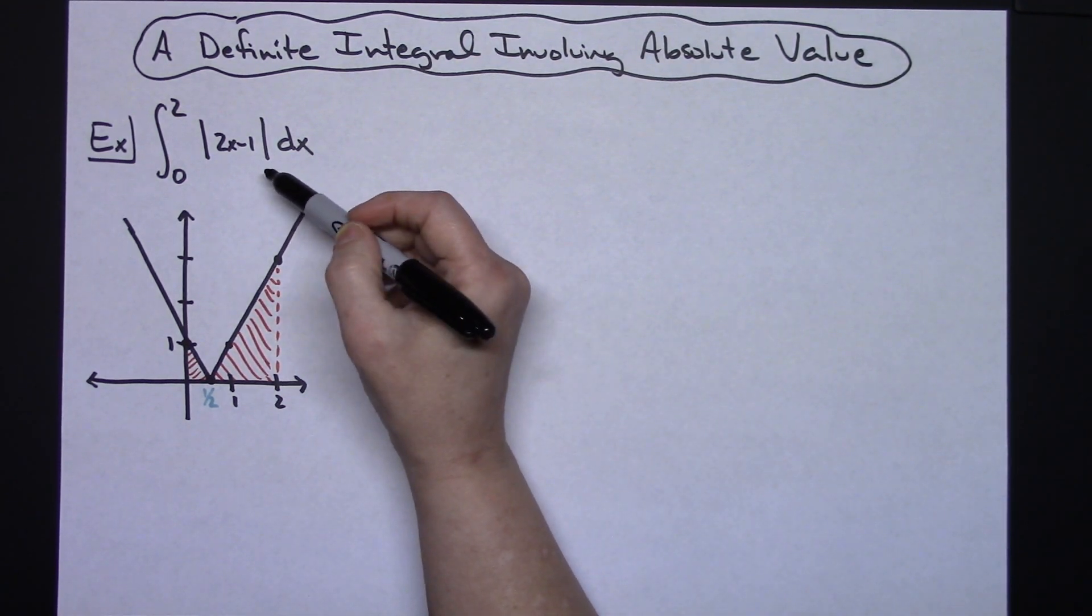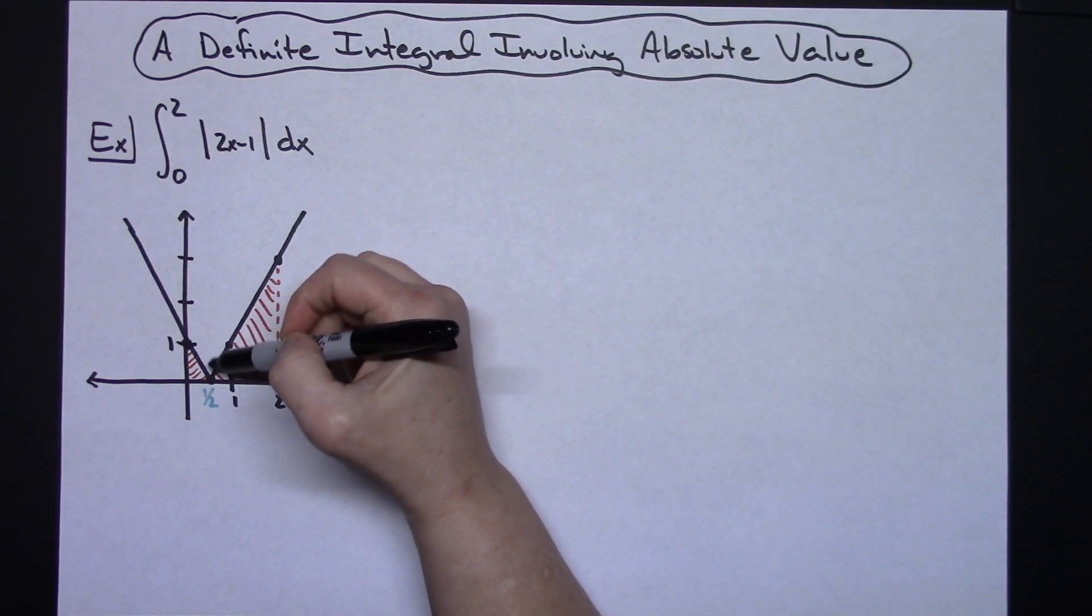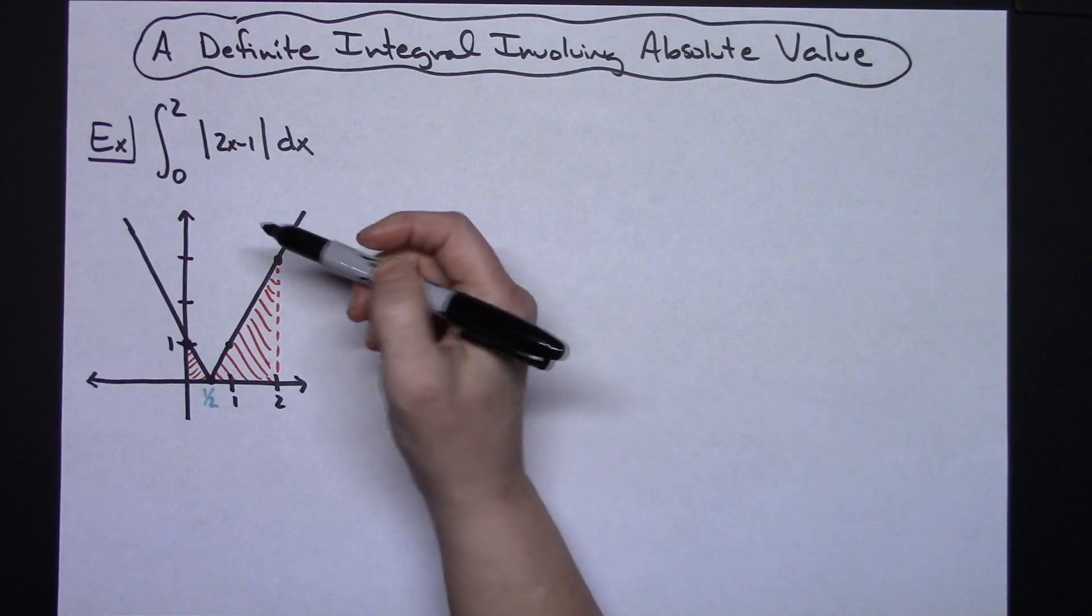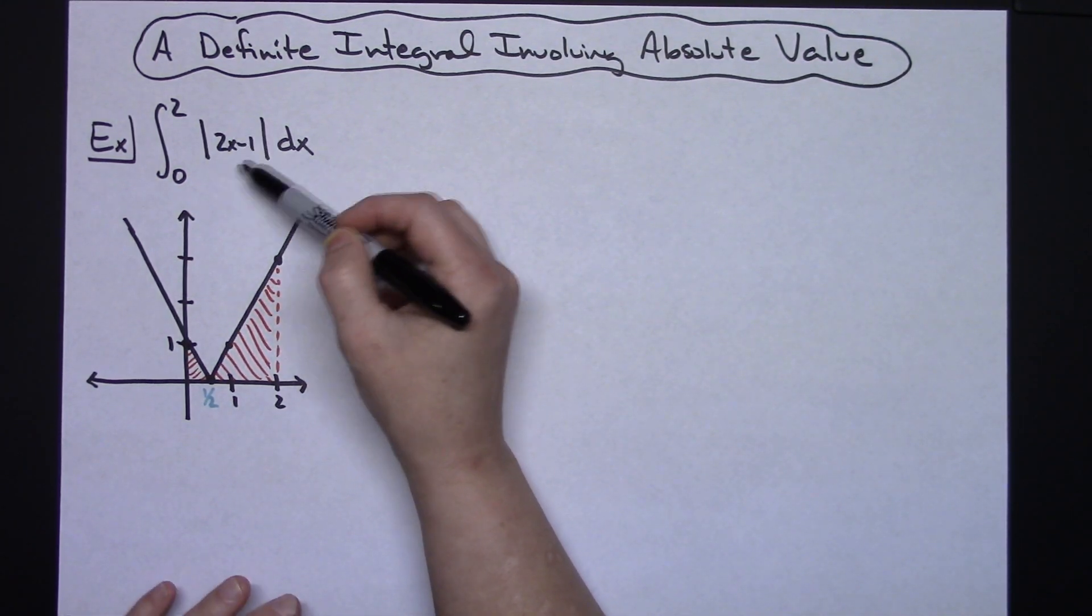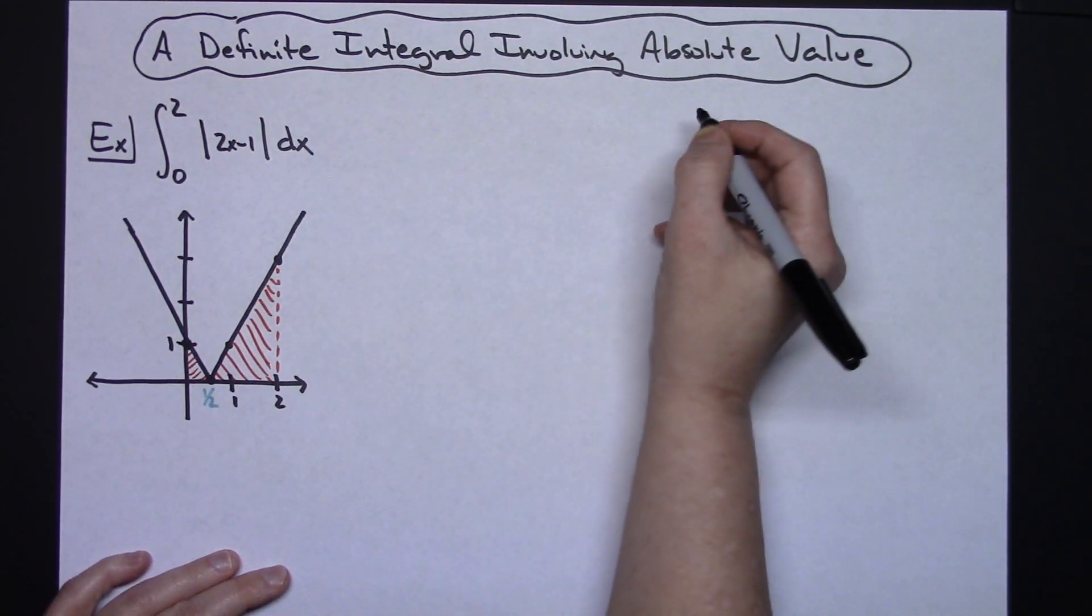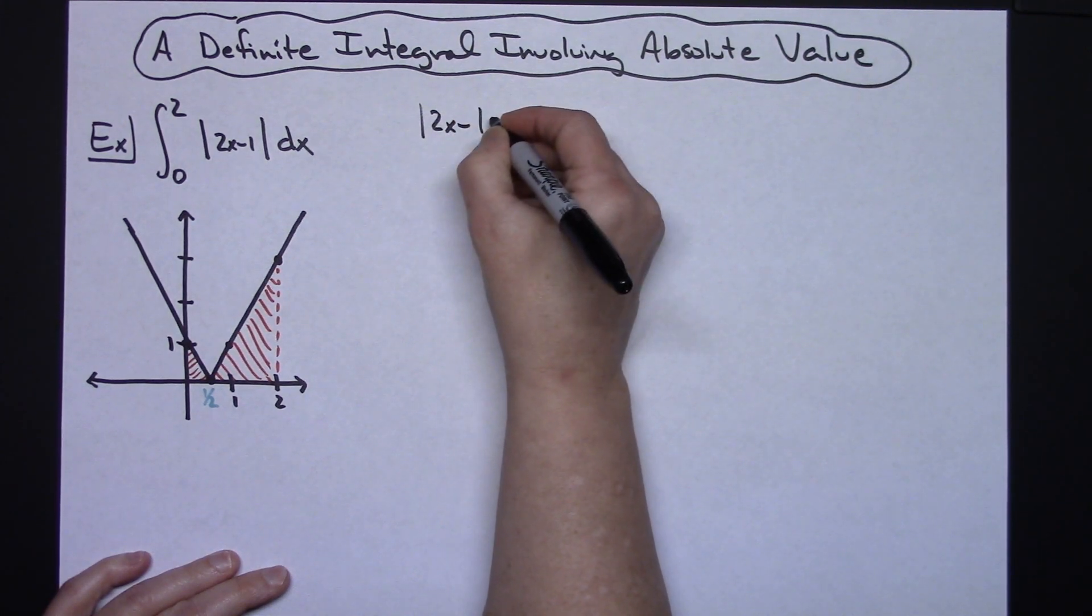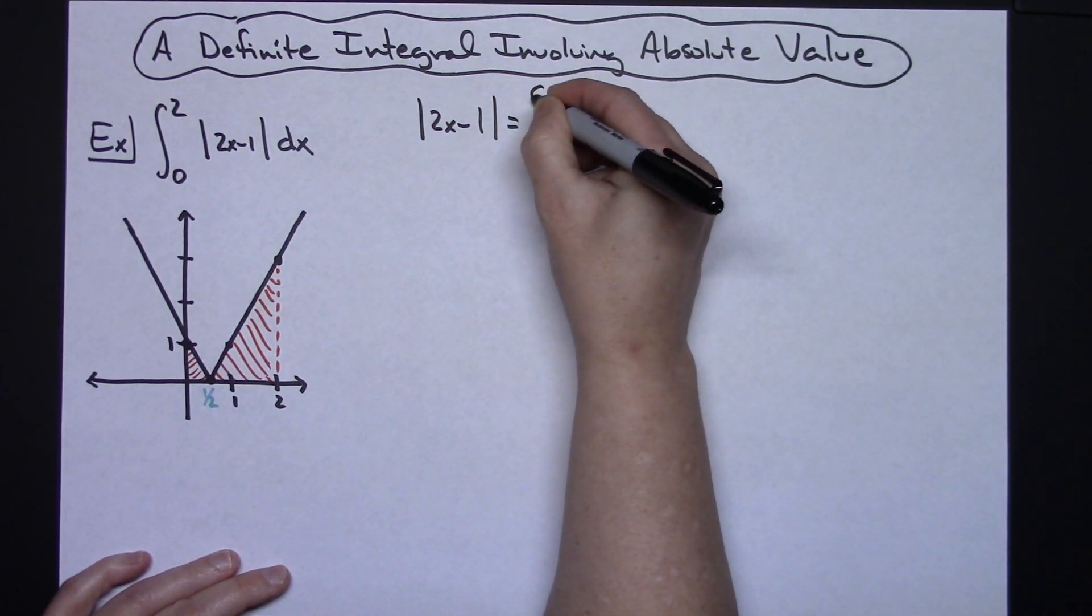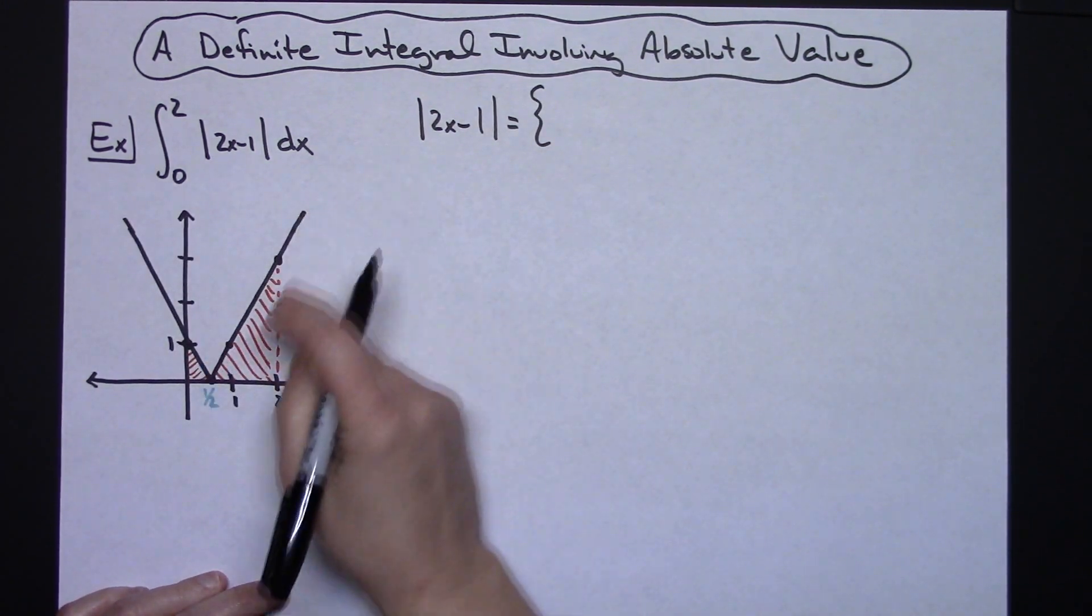Now what I need to do since this is an absolute value graph is I can use the definition of absolute value and I can rewrite this expression. So let's do that just right here. Absolute value of 2x minus 1 is equal to basically a piecewise function. I've got a line here and I've got a line here.